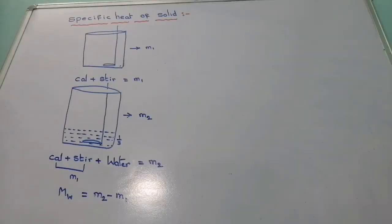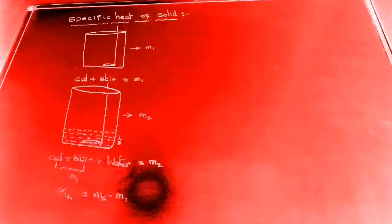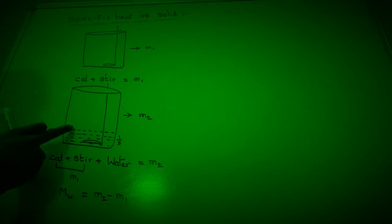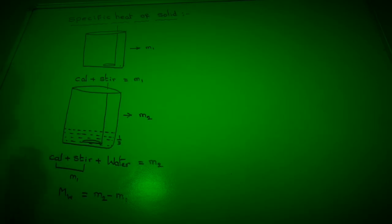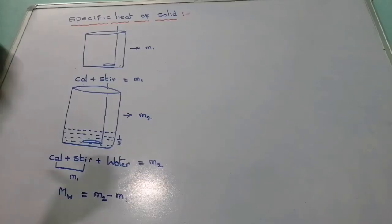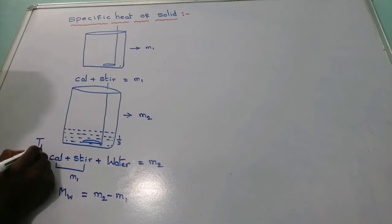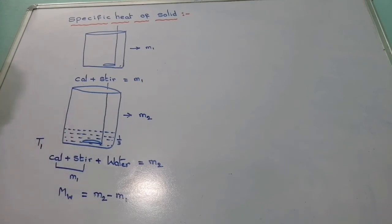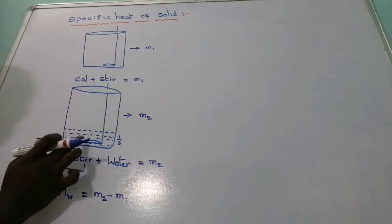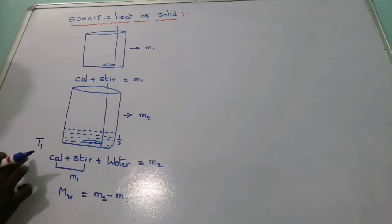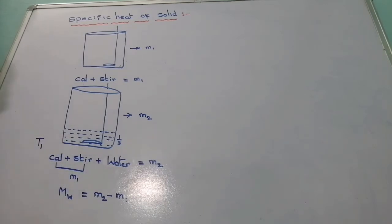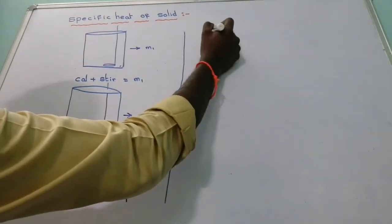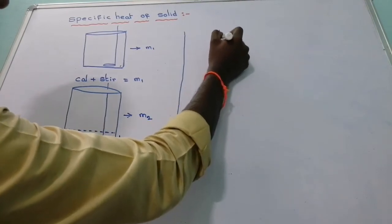Consider that the water and the calorimeter have the same temperature, and call the temperature of this calorimeter along with the water as T1.